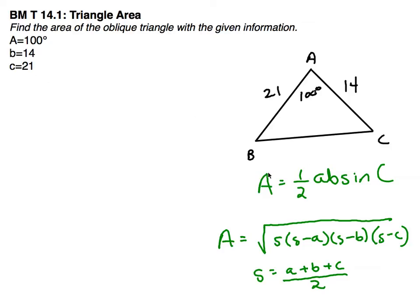Now, we looked at two different area formulas, depending on the information given. One of them is the area is going to equal 1/2 AB sine of C. That's 1/2 the product of the two sides and the sine of the included angle.